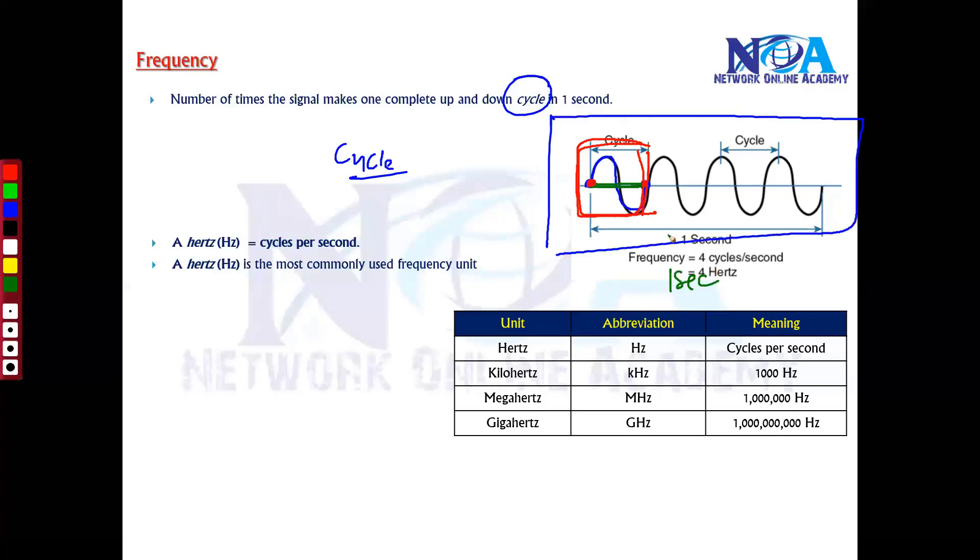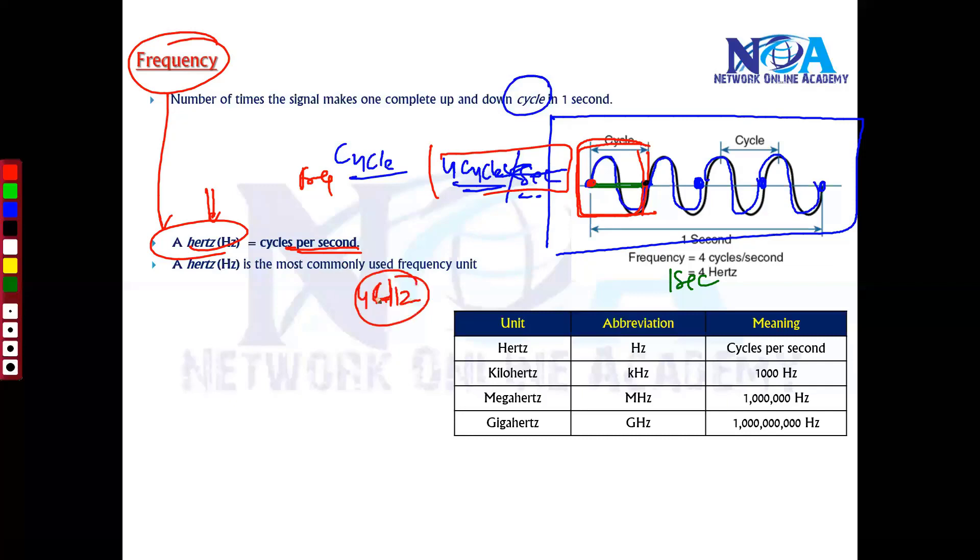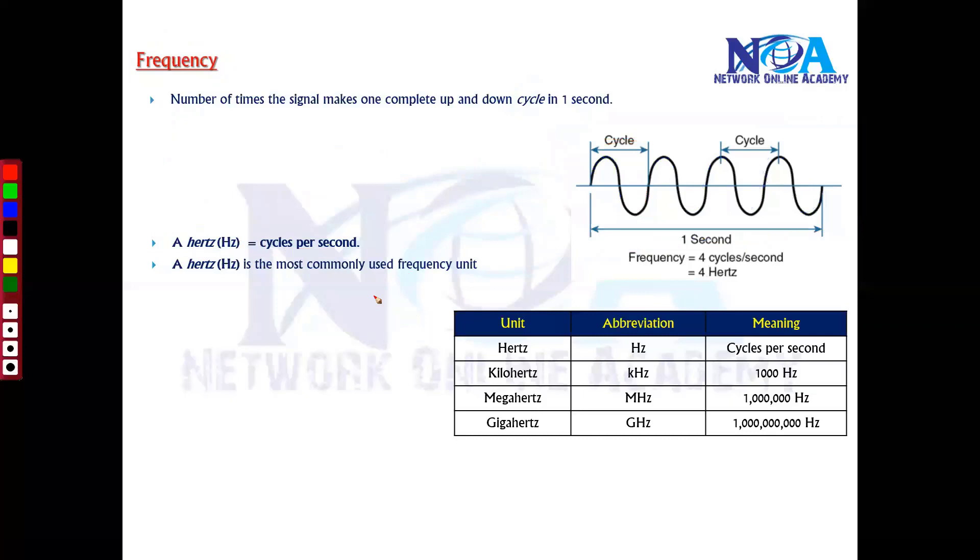If you take one second and count how many cycles it completes - one, two, three, four cycles - this means it completes four cycles per second, and that's what we call frequency. Frequency is the number of cycles completed per second, and it's calculated in Hertz. One Hertz is the number of cycles per second. So in this example, it completes four cycles, which means it is four Hertz.